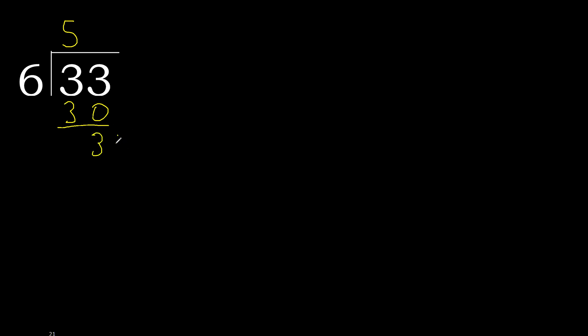There is no next digit, therefore we complete. Always complete with 0. Here we place a decimal point — complete: 0 point.